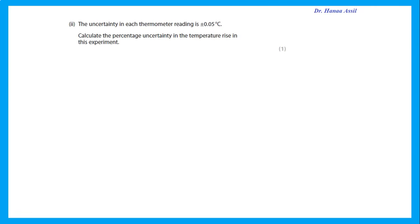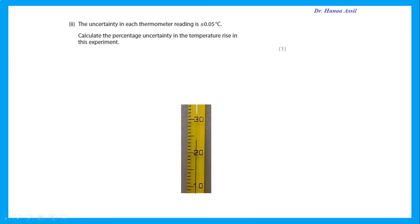Throughout the syllabus, you will be required to calculate percentage uncertainty. If the uncertainty in each thermometer reading is ±0.05, and temperature rise requires two measurements, then the total uncertainty is 2 × 0.05. The percentage uncertainty = (2 × 0.05) ÷ temperature rise × 100. For a temperature rise of 13.2°C, this gives the percentage uncertainty.